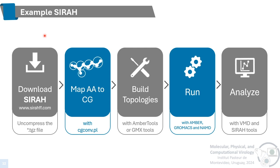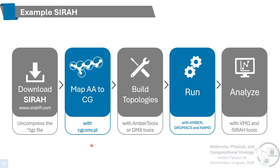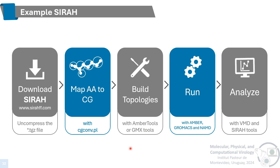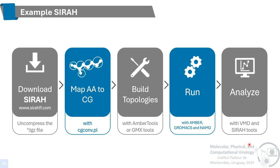Here we have a schematic representation of how to prepare and simulate a system with the Syrah force field. We start by downloading the folder with the necessary parameters to build our system. Then we use a script that maps the all-atom representation to the Syrah coarse-grained representation. We build our topologies using tools provided by AMBER or GROMACS, just like an all-atom simulation, then run the simulation with AMBER, GROMACS, or NAMD. Finally, we analyze the trajectories with VMD and a script called SyrahTools, which can perform analyses such as secondary structure and back-mapping.